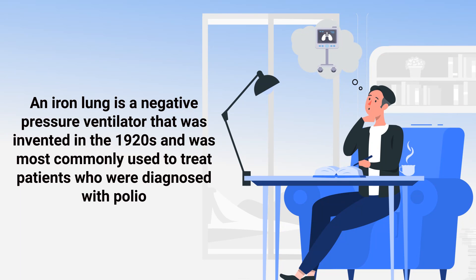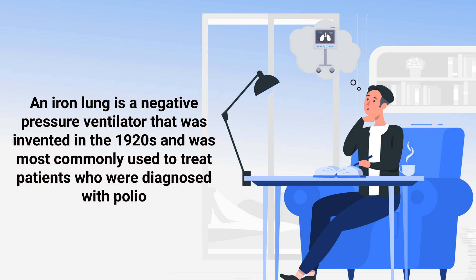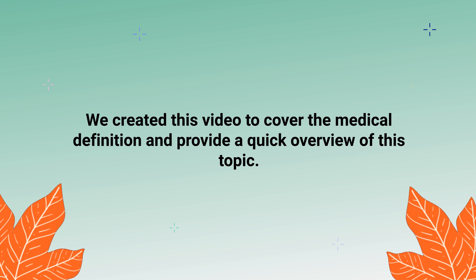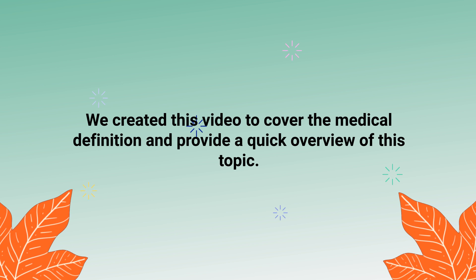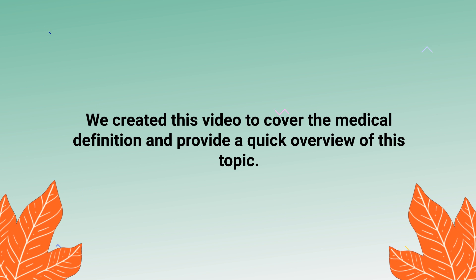An iron lung is a negative pressure ventilator that was invented in the 1920s and was most commonly used to treat patients who were diagnosed with polio. We created this video to cover the medical definition and provide a quick overview of this topic.